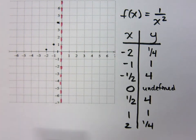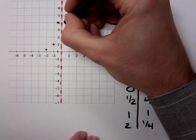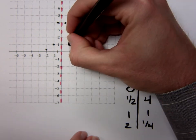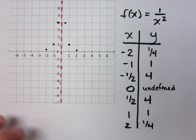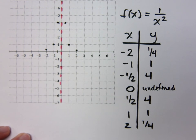And then on the other side of this, I get the rest of my points. 1 half, 4. 1, 1. 2, 1 fourth. What type of symmetry do you see right now with what I have? Y axis symmetry.